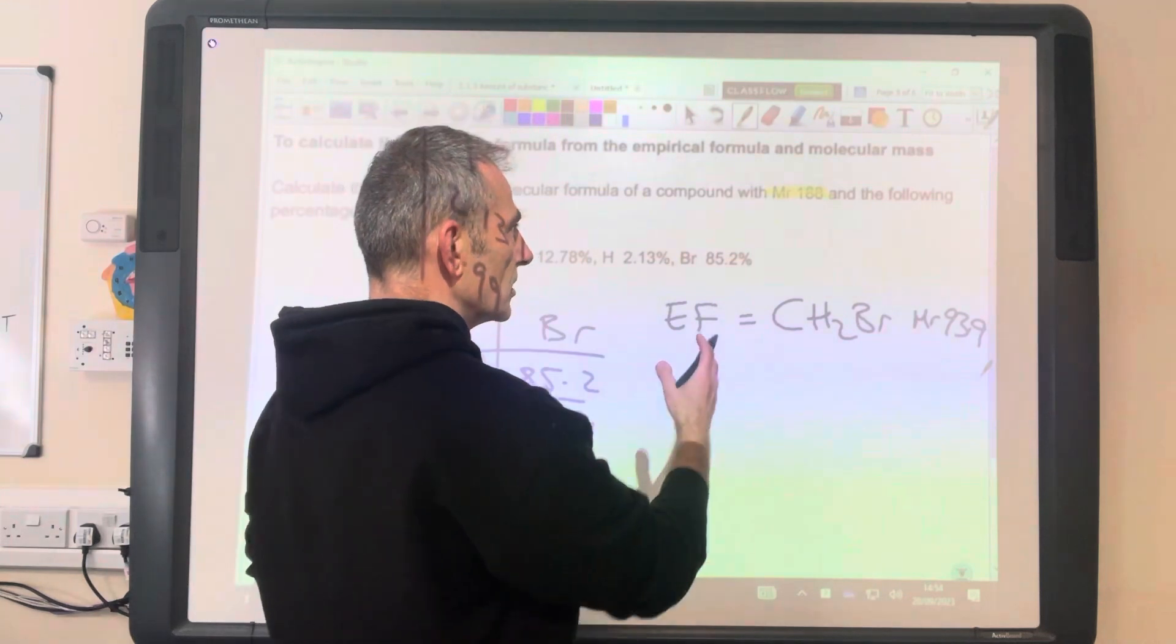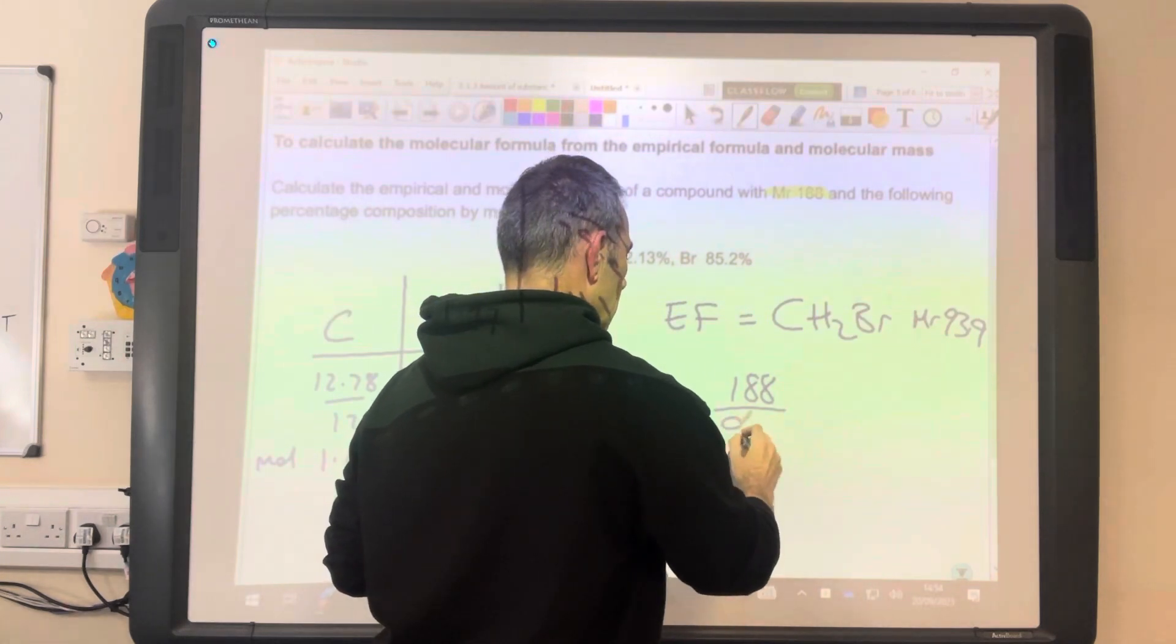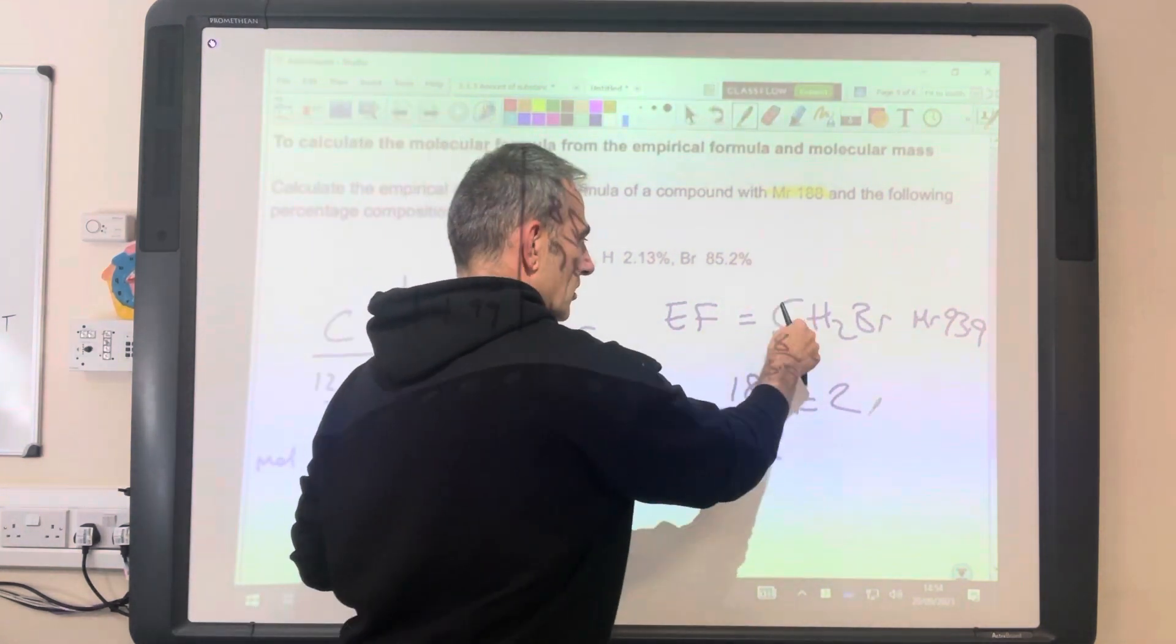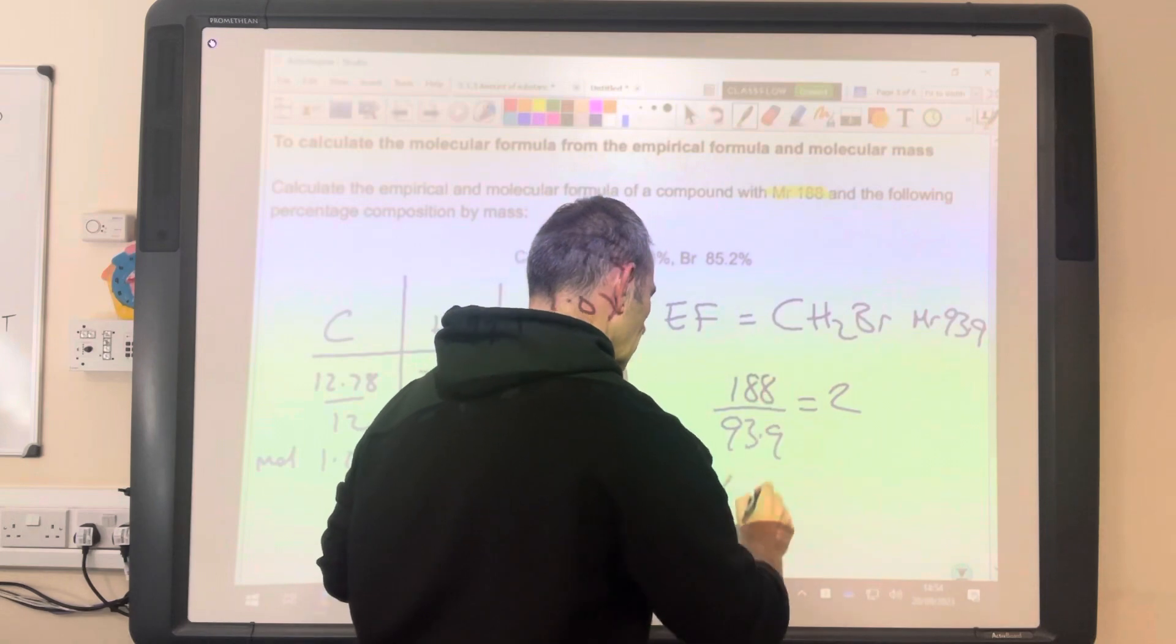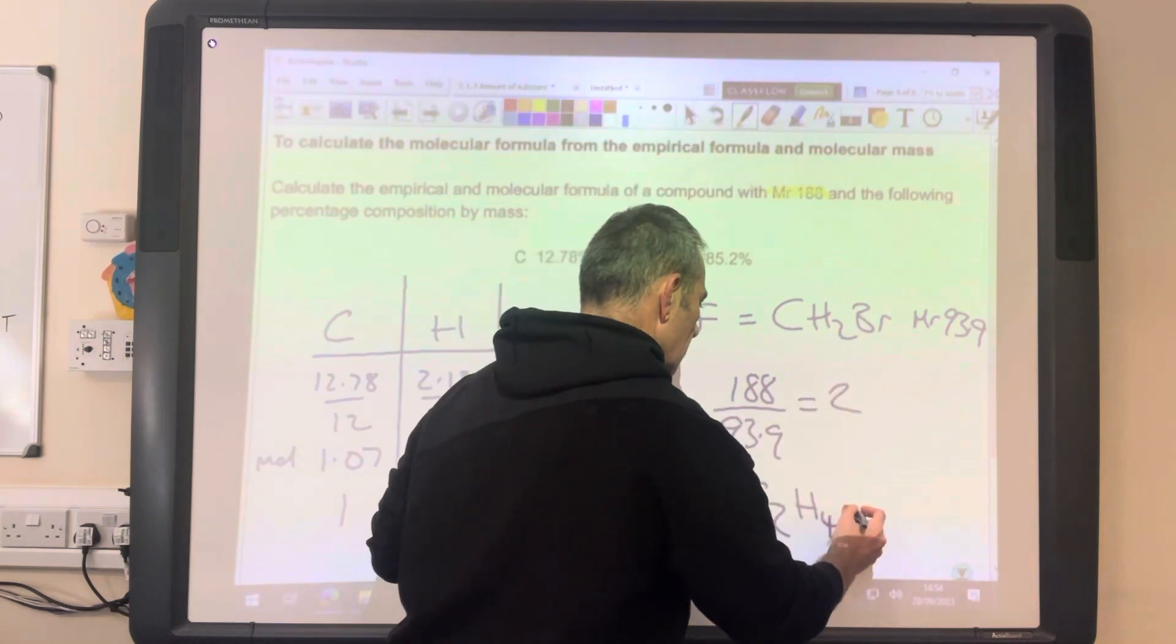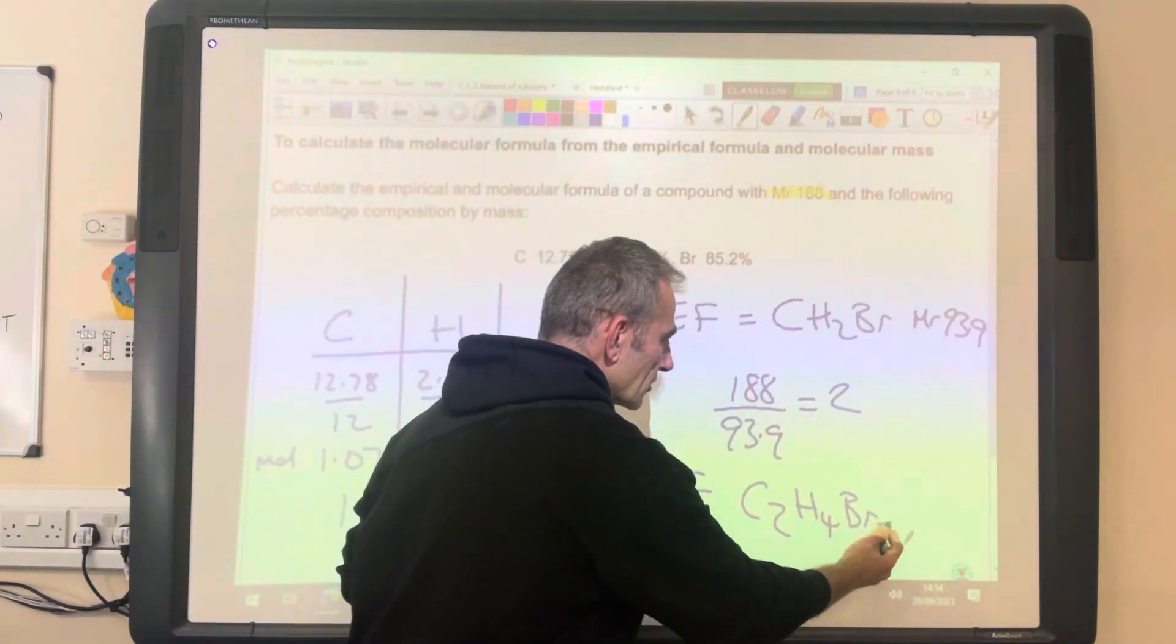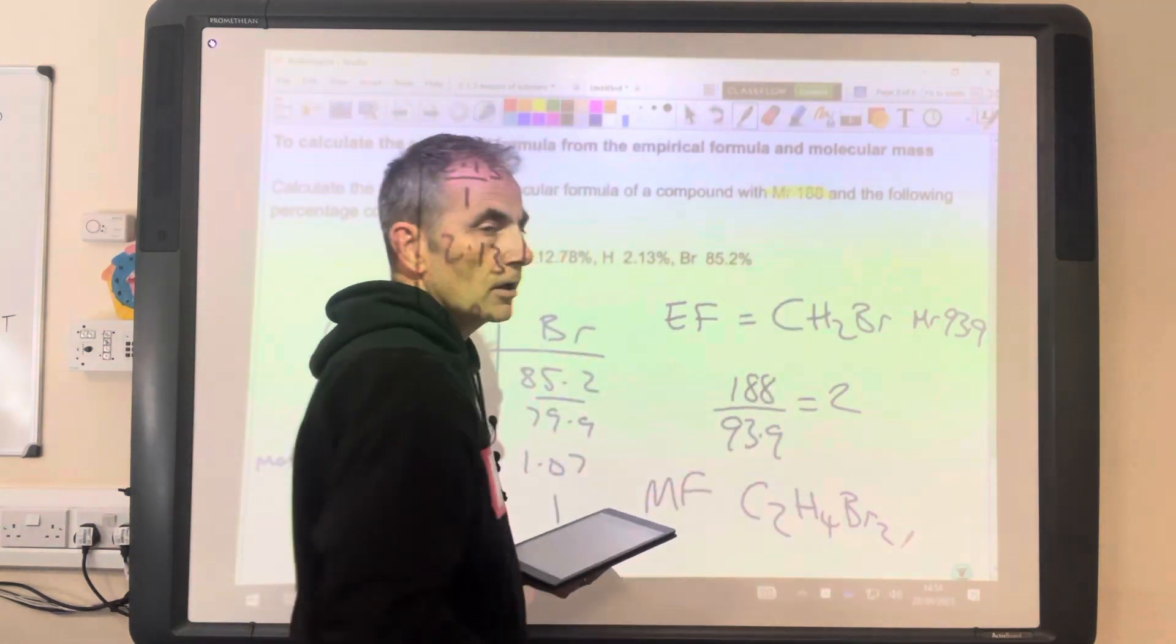So we need to find out how many times bigger that is. So we're going to go 188 divided by 93.9 is 2. So all we need to say now is, well, the molecular formula is 2 times all of that. So the molecular formula must be 2 carbons, not 1, C2, 4 hydrogens, not 2, so H4, 2 bromines, not 1, Br2. It's still got the ratio in, 1 to 2 to 1, but that's the actual number of atoms in the molecule and that will give you that MR of 188.